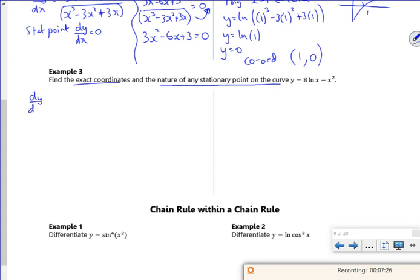So find the exact coordinates and the nature of it. So I'm going to do a quick differentiate. So I've got dy by dx. So log x is 1 over x. 8 log x would be 8 watts of 1 over x. So 8 over x minus 2x. So I want the stationary points. So I've got 8 over x minus 2x is 0. So I've got 8 over x is 2x. Divide by 2 times by x.